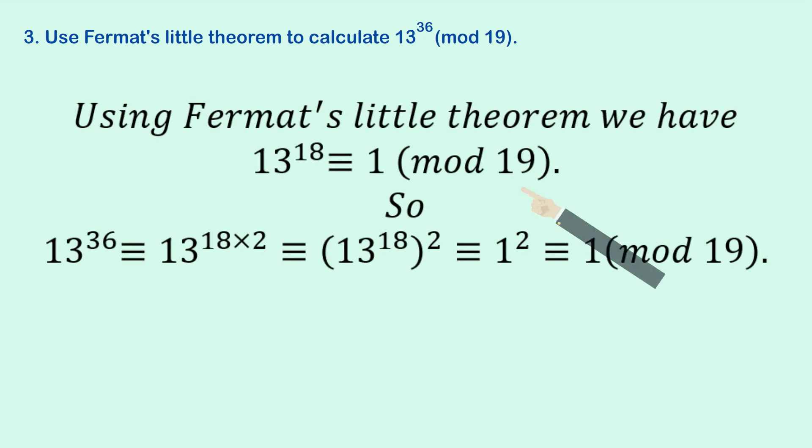So, because 19 is a prime, we know from Fermat's Little Theorem that 13 to the power of 18 is equivalent to 1 mod 19. So, we somehow have to use that, and we can recognise that 18 is half of 36, which gives us a bit of a clue.